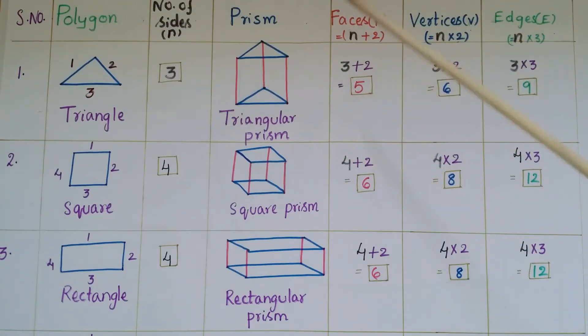Let us go through with some examples. Suppose if you take a triangular prism, in a triangular prism the congruent polygons are triangles, so triangle is having 3 sides. So number of faces for triangular prism is equal to 3 plus 2 that is 5, and vertices is equal to 3 into 2 that is 6, and edges is equal to 3 into 3 that is 9.